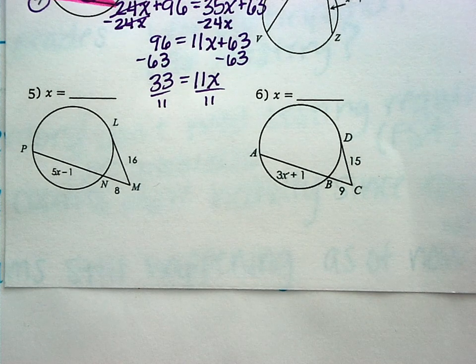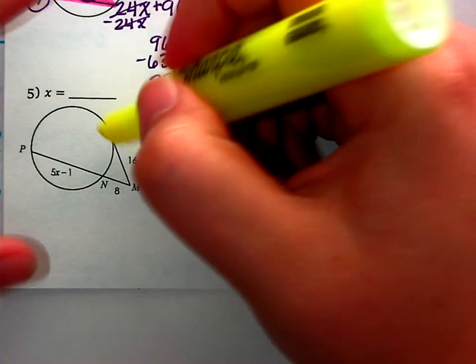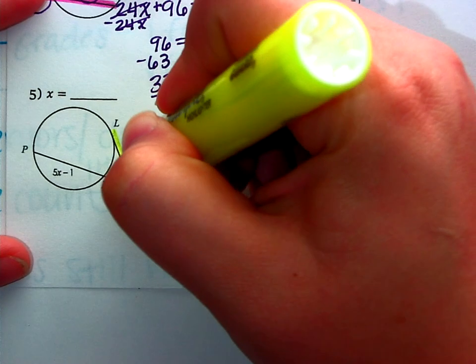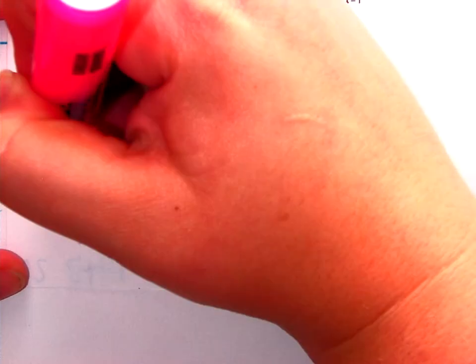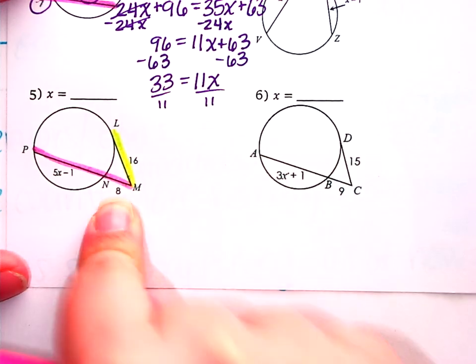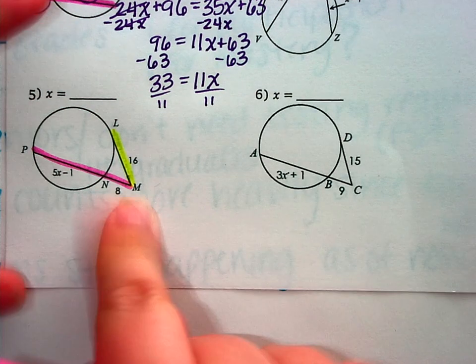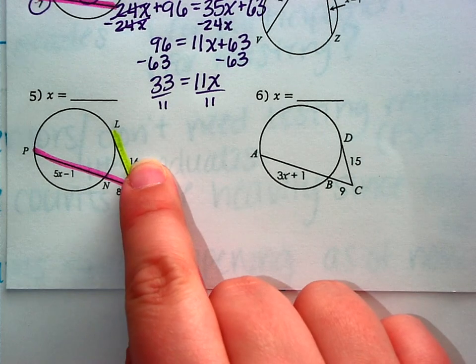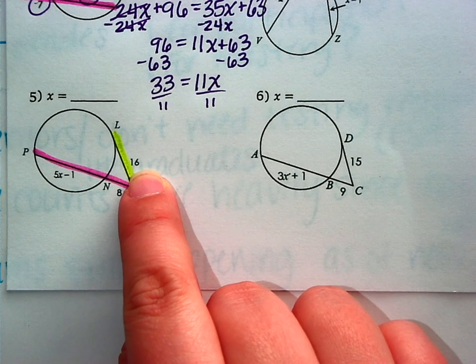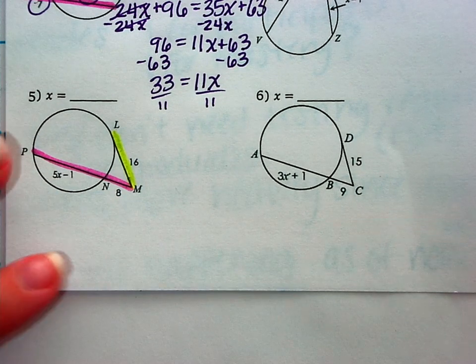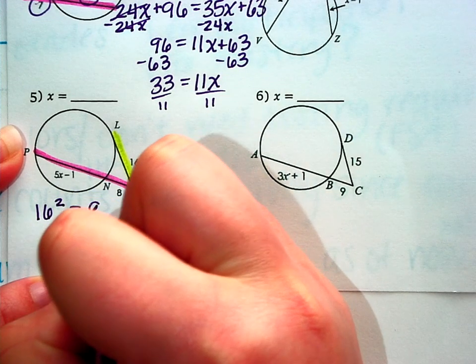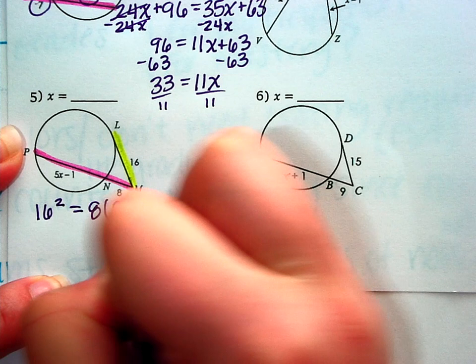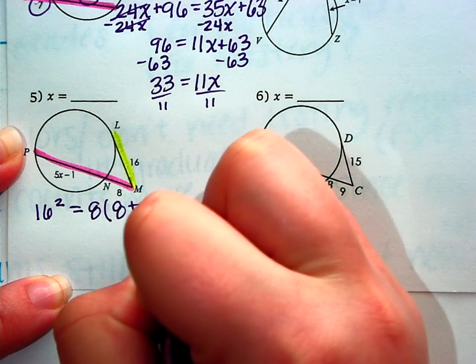Number 5 and number 6 is when we're dealing with a tangent. So we have just this piece of this line, 16. And then we also have a secant. So whenever we have secants, we're going to do the outside times the whole thing. And a tangent is that number squared. So we're going to have 16 squared equals 8 times 8 plus 5x minus 1.